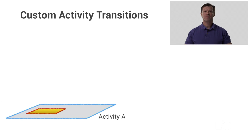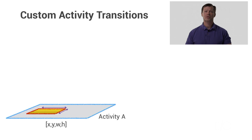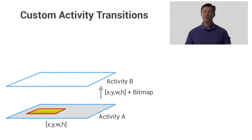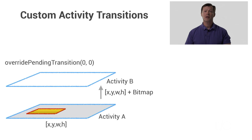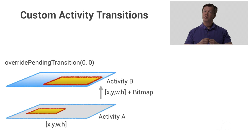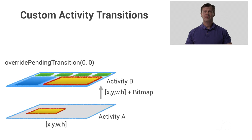Here we have Activity A, with a little yellow view that we want to transition into the new activity. In the old way of doing things, the first thing we had to do was capture the size and position of the shared element. Next, we started the activity passing the location in the intent. Our new Activity B had to start as a translucent window with a transparent background. It also had to prevent the default scale and fade transition. The shared element view was then sized and placed in the position passed in the intent. The background was then faded in, and the shared element could then transition to its final location, and then the rest of our UI could come in. Wow, that's a lot of work. Let's see how we do it with the new Activity Transitions API.